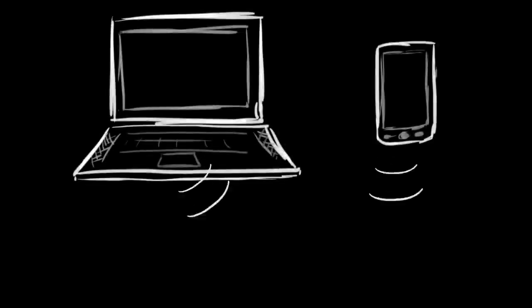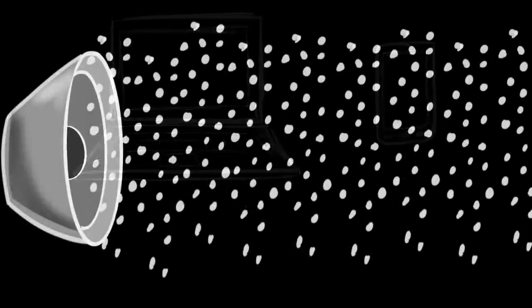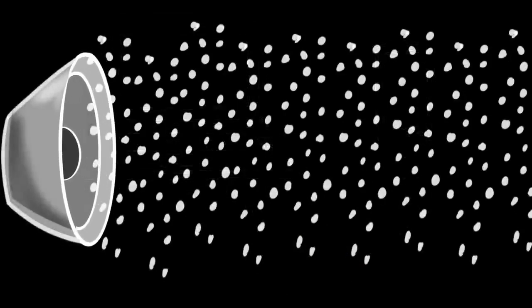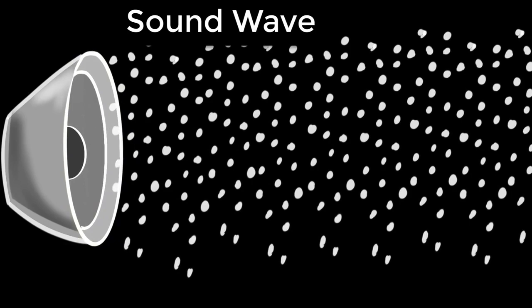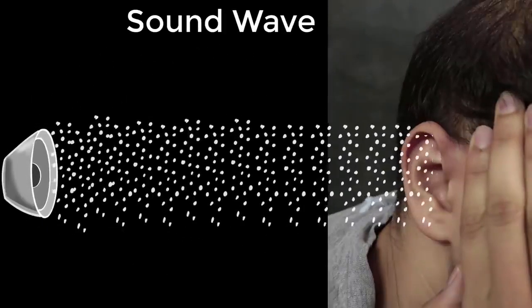How are you listening to this music right now? You might know that your speakers are creating sound and your ears are listening to it, but there's a lot more going on. All your speakers are doing right now is vibrating the particles of the air close to it, then they vibrate the air molecules close to them, and so on and so forth. We call this a sound wave, and eventually when the air molecules close to your ears start vibrating, we hear sound.